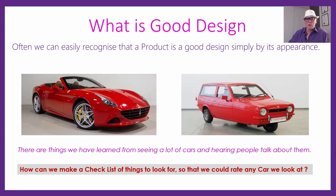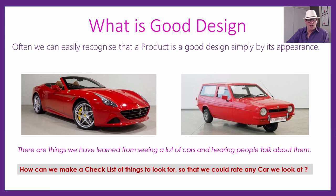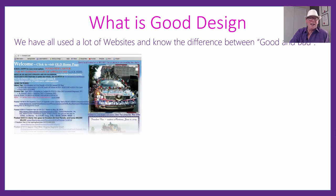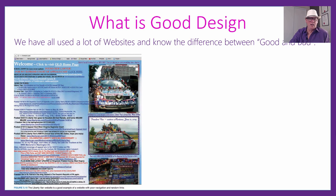One of my first criteria would be anything with just three wheels — not good. We want at least four wheels on the car. That could be one of the design rules we set up. We've all used a lot of websites and we know the difference between a good one and a bad one.